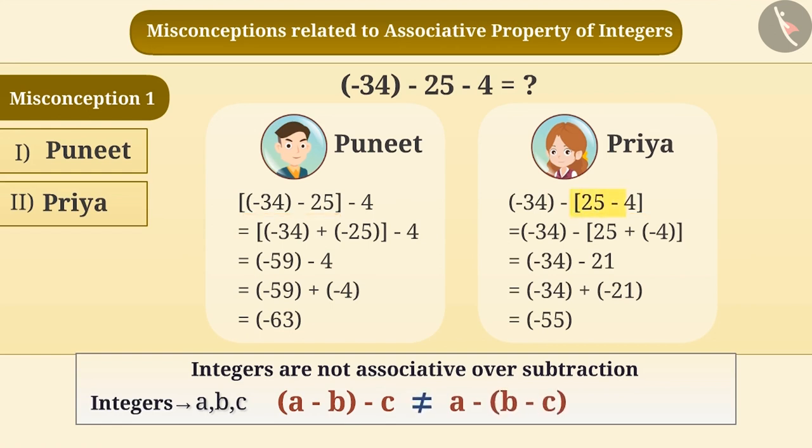In this example, Priya made a group of 25 and 4 and solved it. She obtained the result as minus 55, which is an incorrect answer. The correct understanding is that while performing subtraction of integers, first, two integers have to be subtracted and the third integer has to be subtracted from the result. Therefore, Puneet's answer is correct. That means, the correct answer to the given question is option 1.